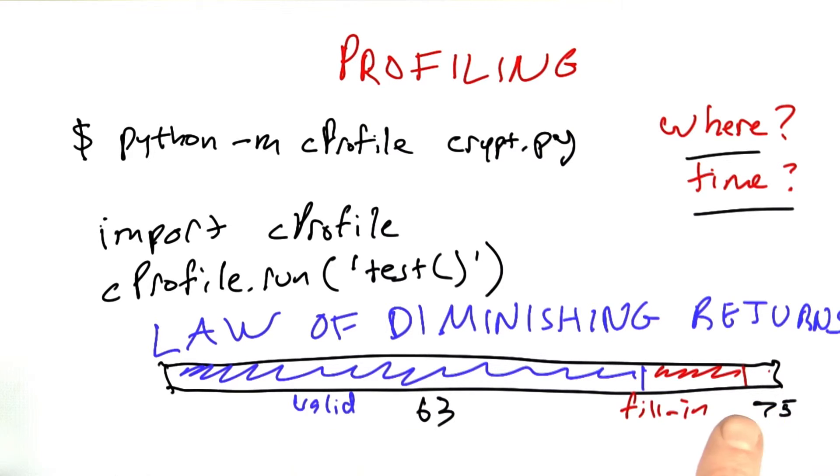we can see if we want to make things faster, we better make this bar shorter, or maybe this bar, and it won't help much to make these other bars shorter. For example, if we made fill in and everything else vanishingly small, then if we didn't touch valid, we'd still have an execution time of 63 seconds, even if we can improve these infinitely fast, and we wouldn't have helped all that much.